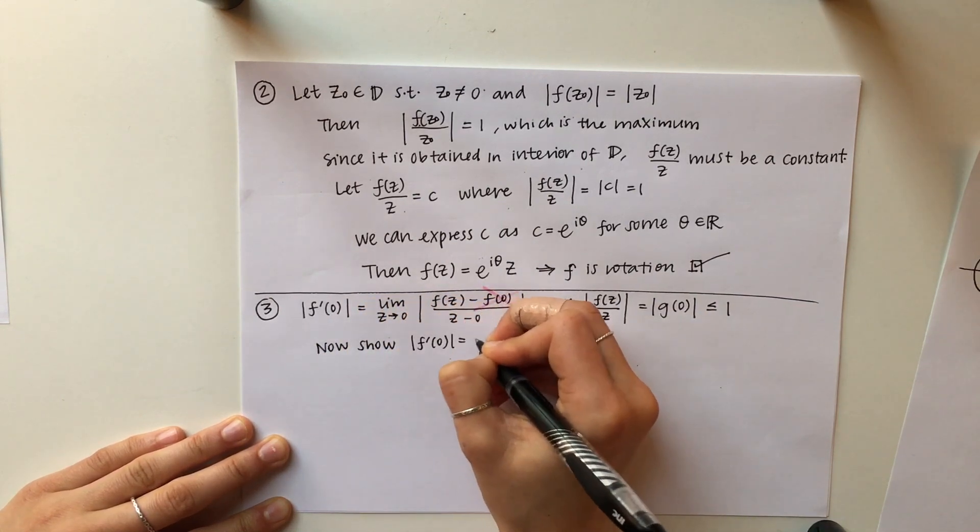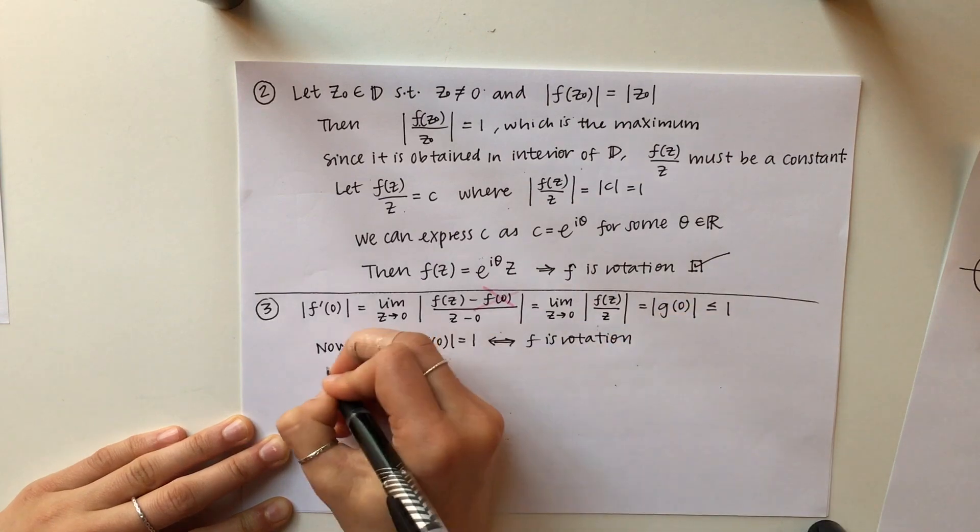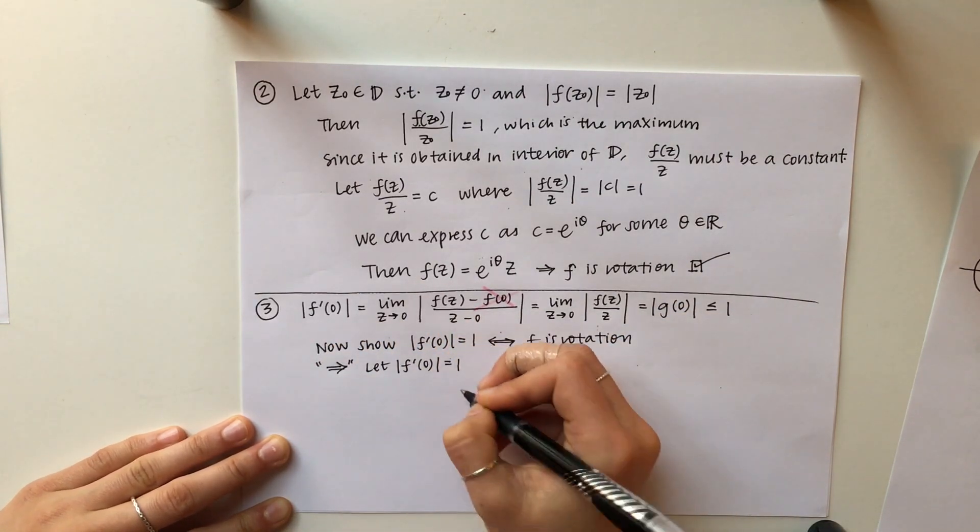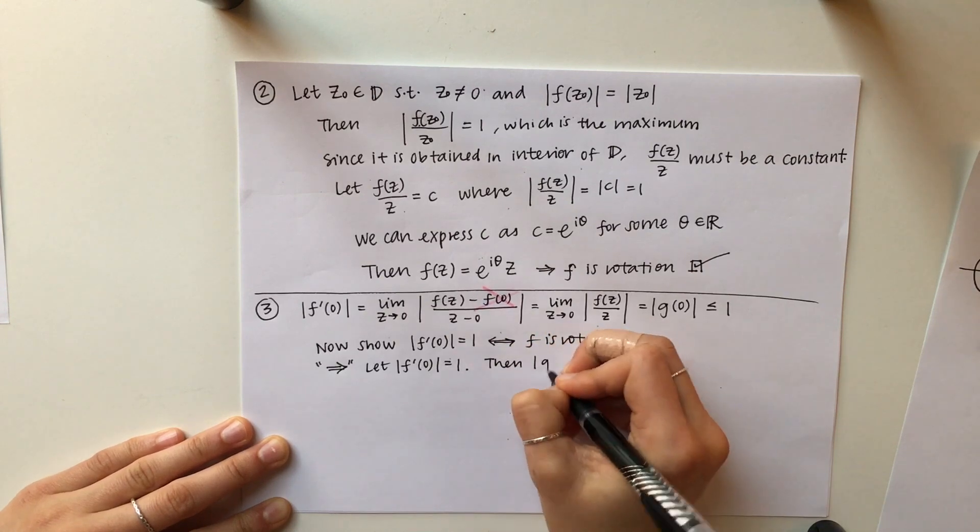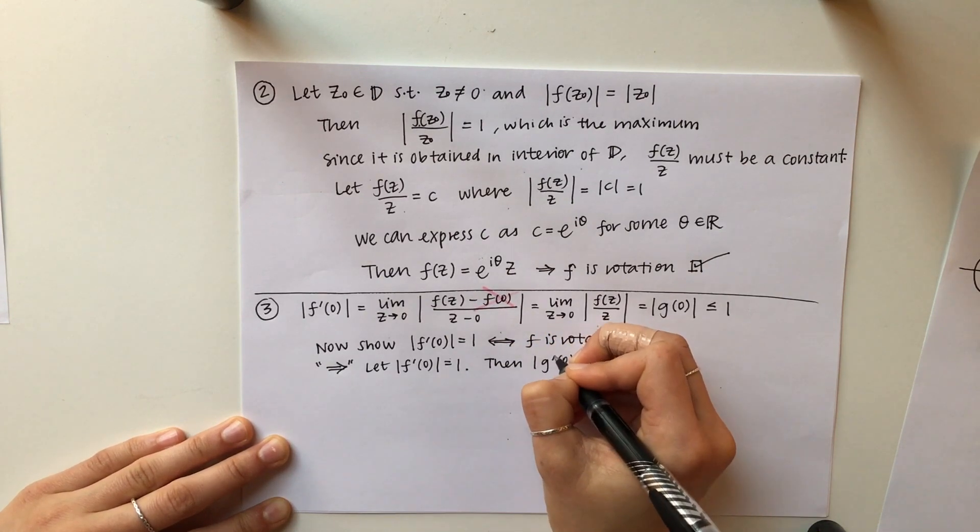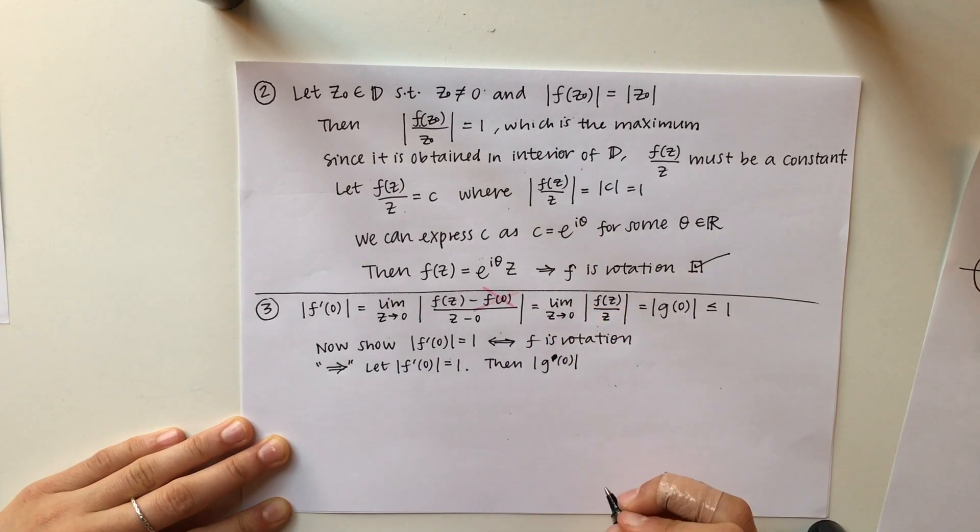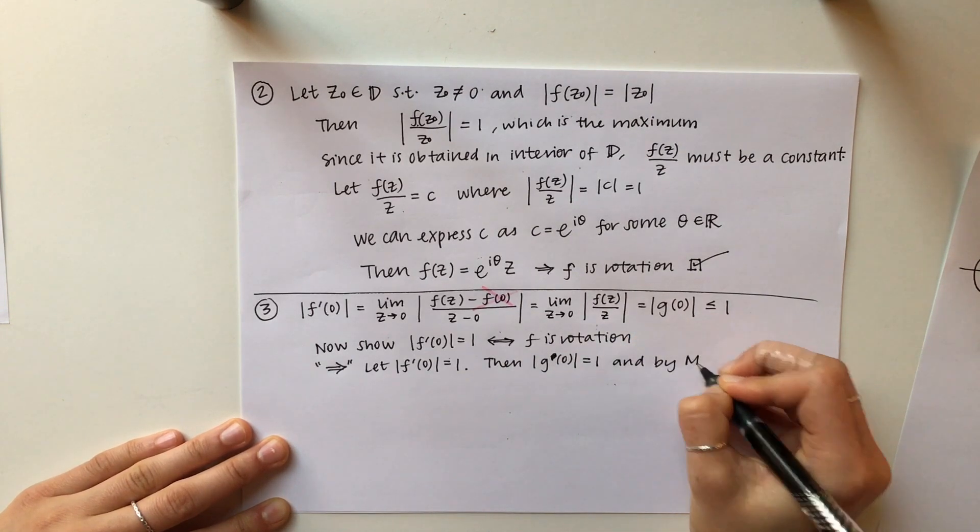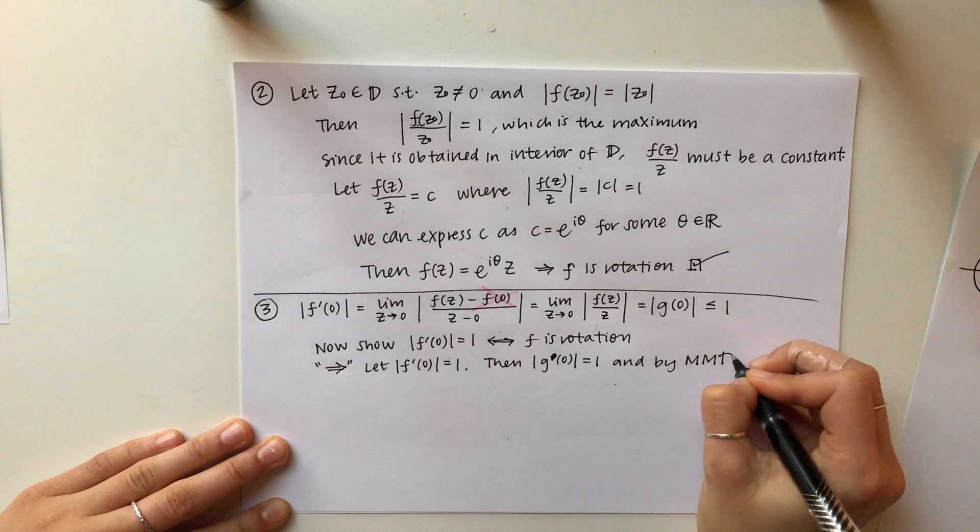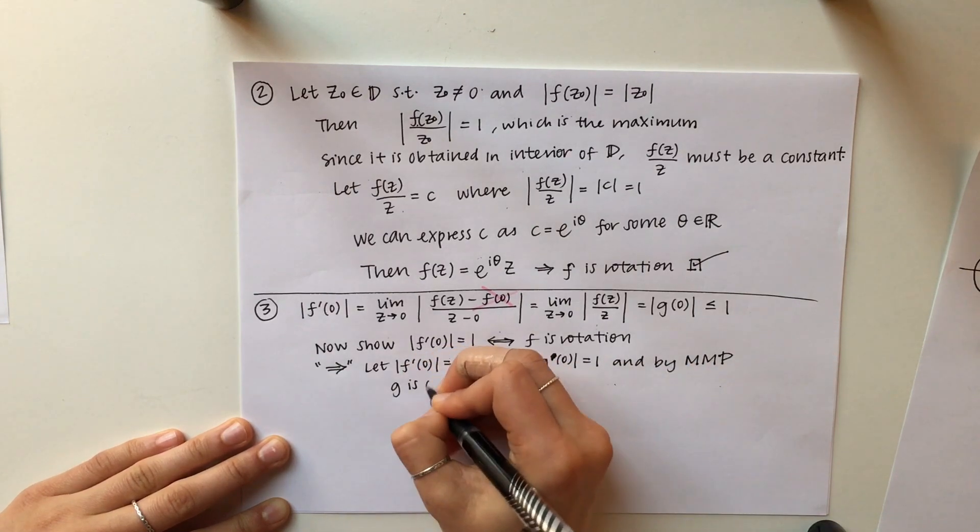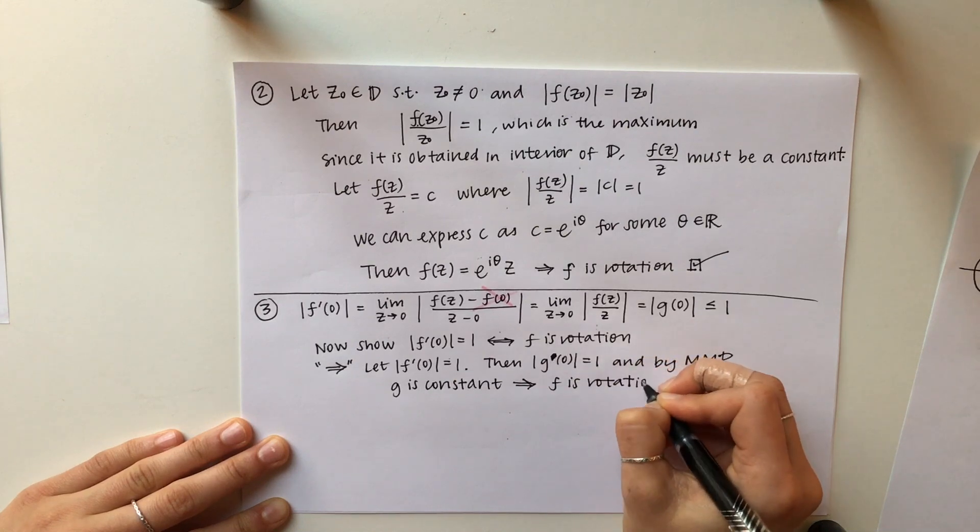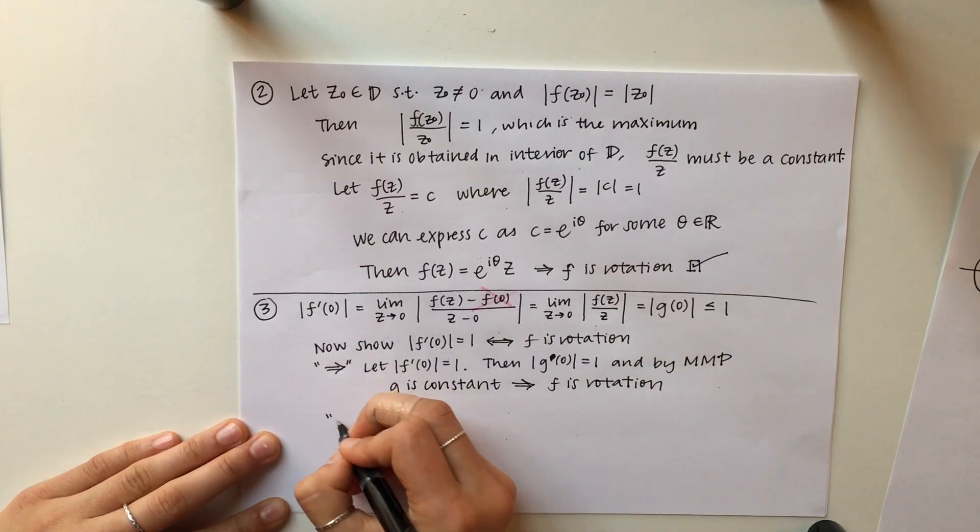So now we want to show that if there's equality, then we have a rotation. First we're going to show that if we know that there's equality, then the G defined at 0 equals 1 since those are equal to each other. And if G defined at 0 equals 1, again, by the maximum modulus principle, we have that G is a constant. And following the same logic as before, we know that F is a rotation.